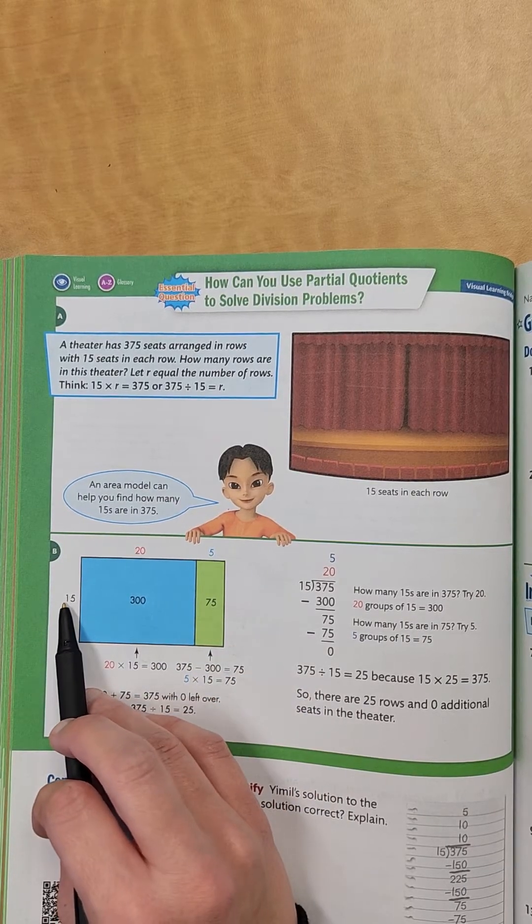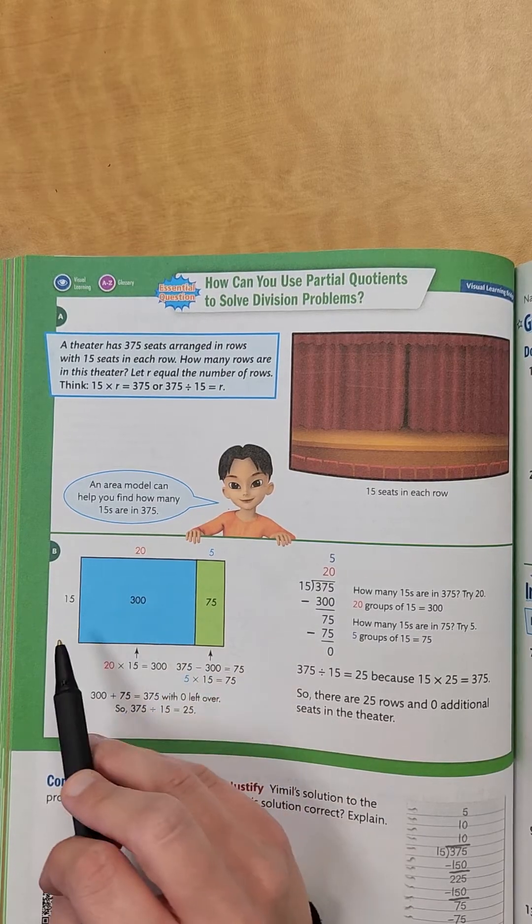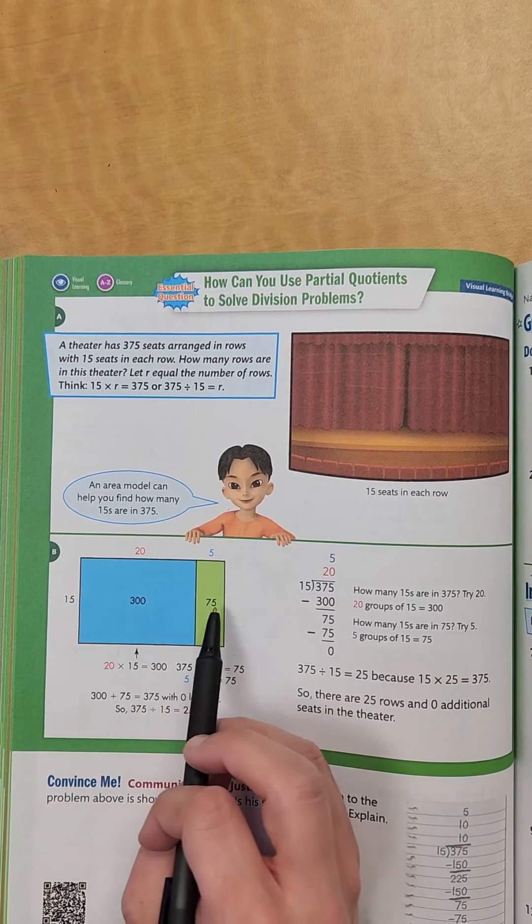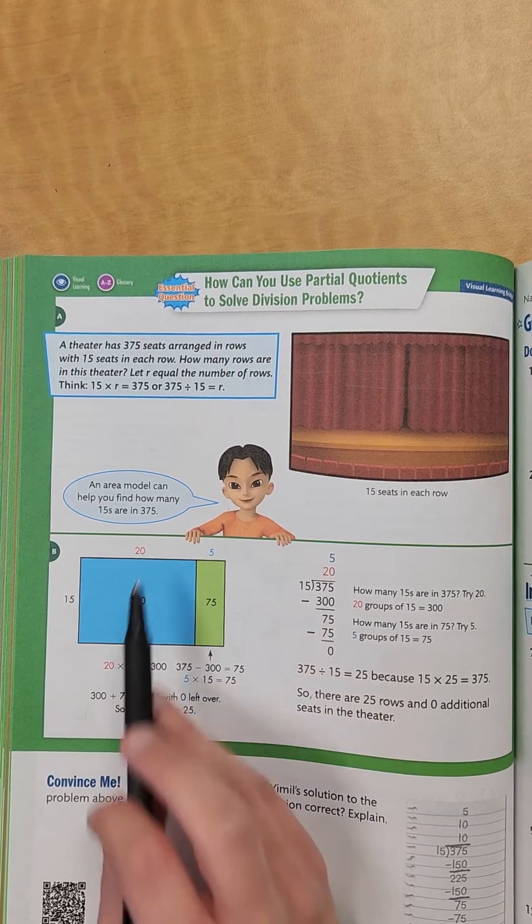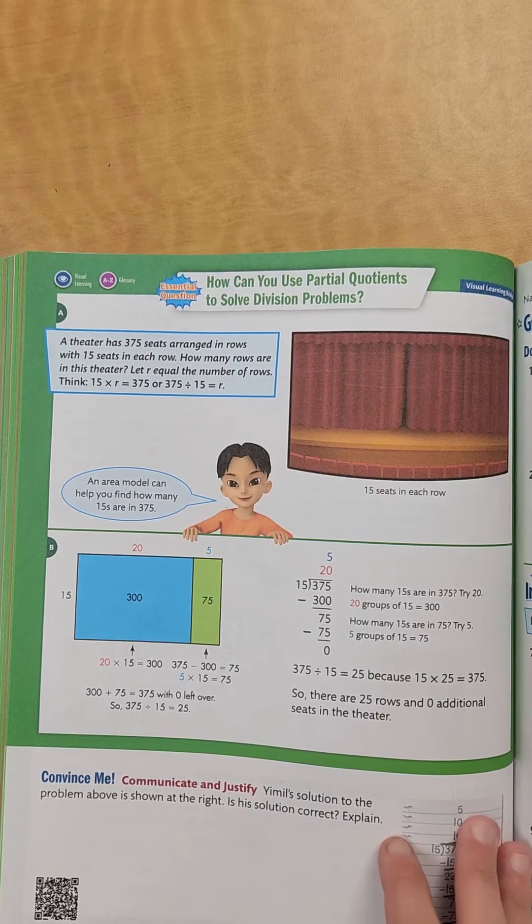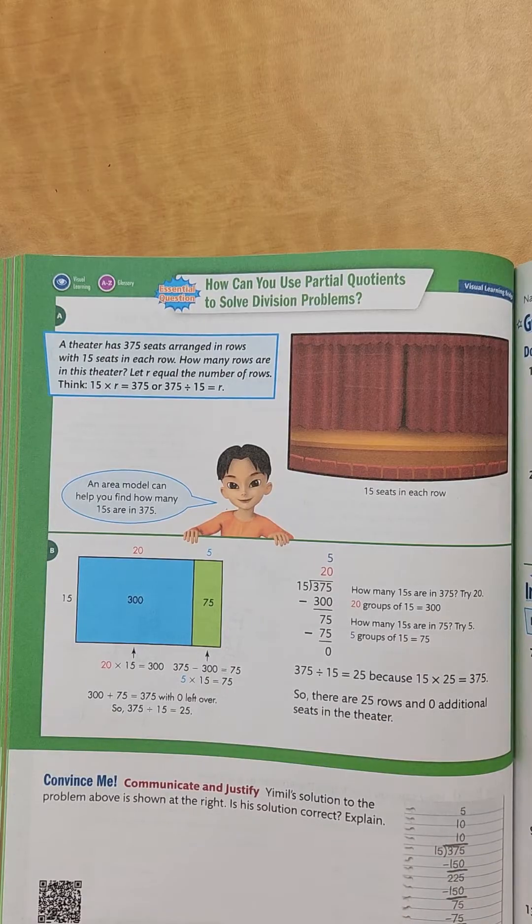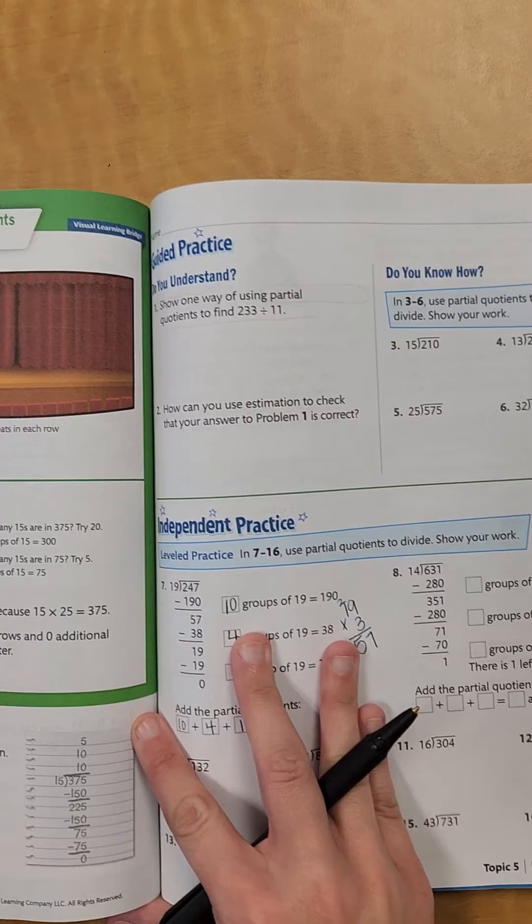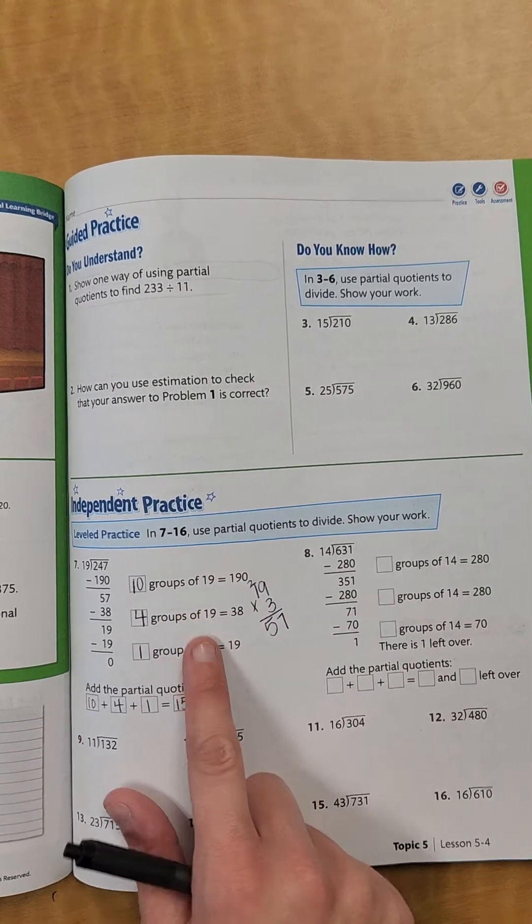So this area model is going to show us, we have our numbers that we would multiply together, and we have to figure out what these top numbers are. So 15 times what is going to give me 300? So we know that that would be 20. And so then we would have, we've broken it up by 75, so 15 times what equals 75? That's 5. And then you would add up your two unknown sides. So it would be 25. That's why I kind of skipped this, because I felt like that might be a little too confusing, and I didn't want to confuse y'all. I felt like this partial quotient right here would be a better way.